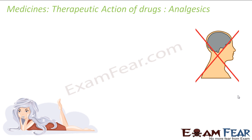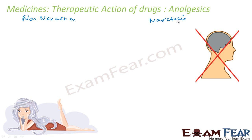Analgesics reduce or abolish pain without causing any harm to consciousness or creating any mental confusion or disturbance to the mental system — the whole nervous system is not touched. So they are better than tranquilizers. There are two types of analgesics: non-narcotics and narcotics. Non-narcotics are non-addictive, while narcotics are the ones to which you get addicted.